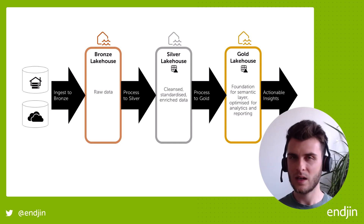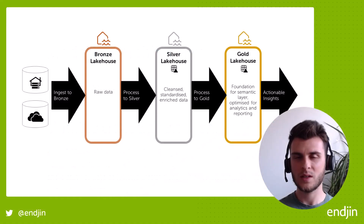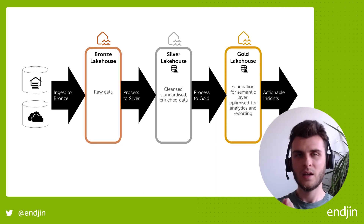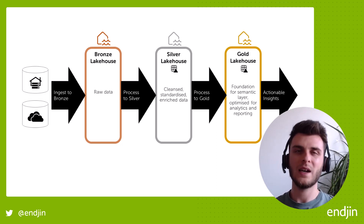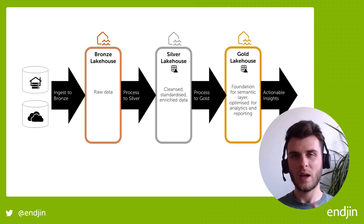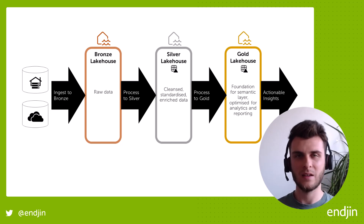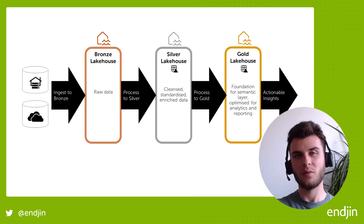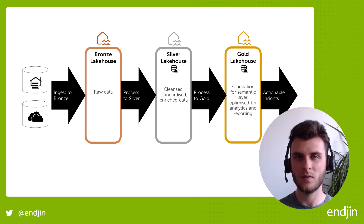The medallion architecture was coined, I think by Databricks a number of years ago, but it's not really a new concept. It's the case of separating out raw data, standardized or cleaned or enriched data, and then curated data or projections of your silver data. At least in Microsoft land we've thought of these lake house architectures as different tiers, but the medallion architecture really solidifies the concept that there are generally three different layers of your architecture that all serve slightly different purposes.